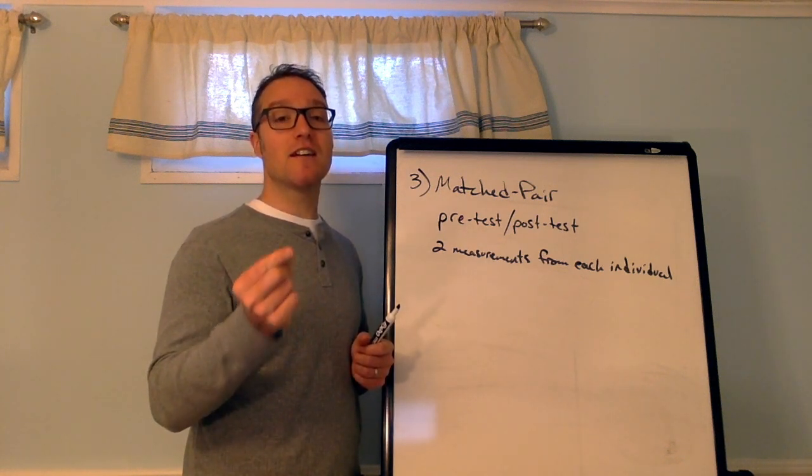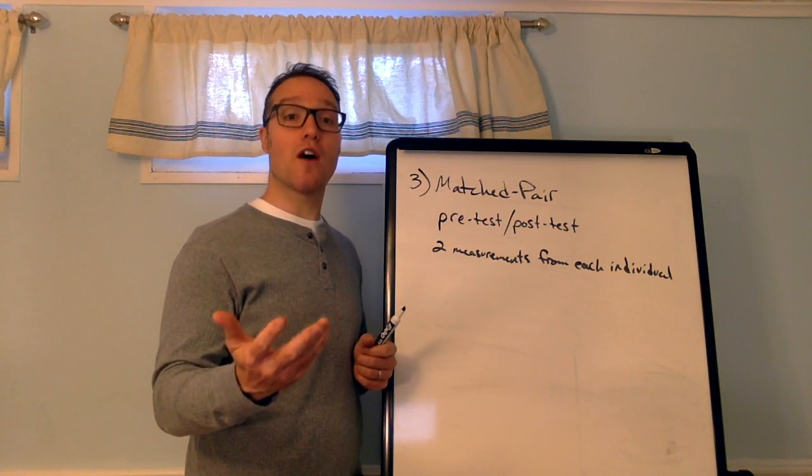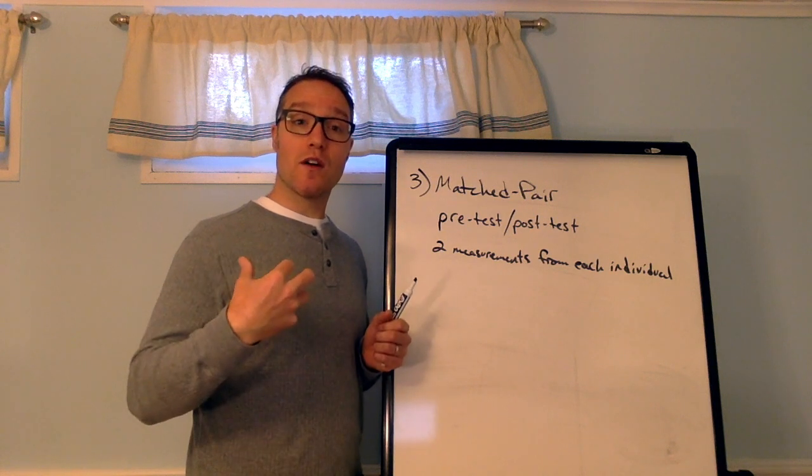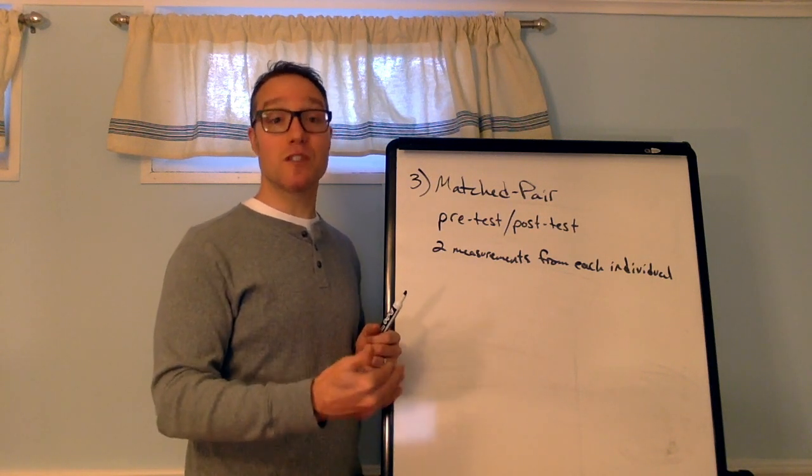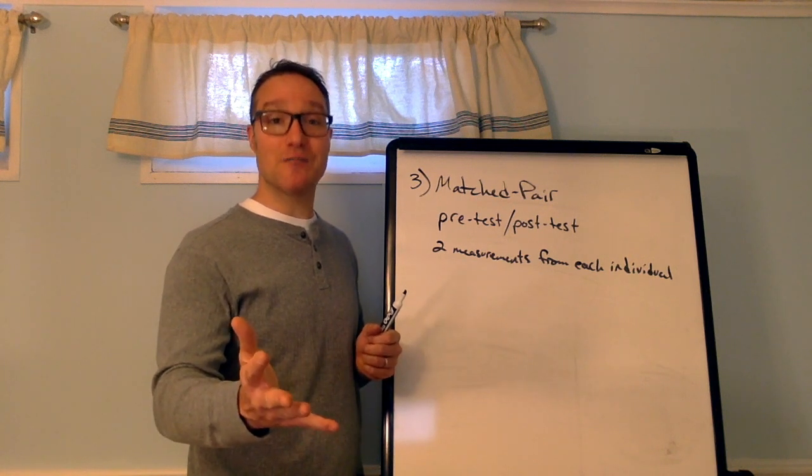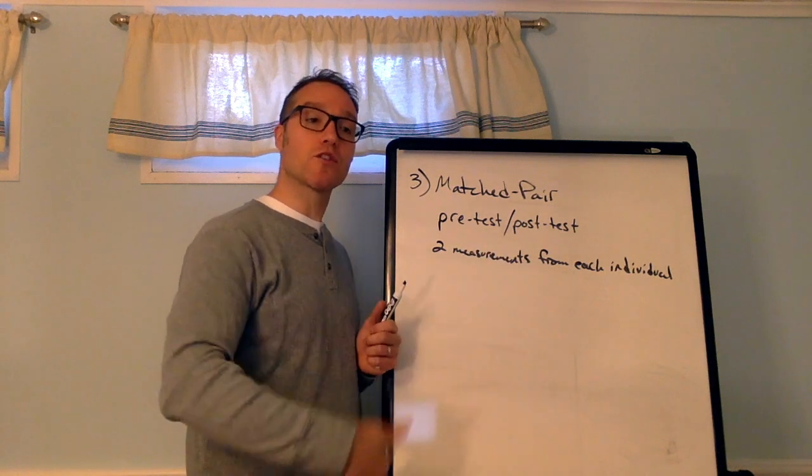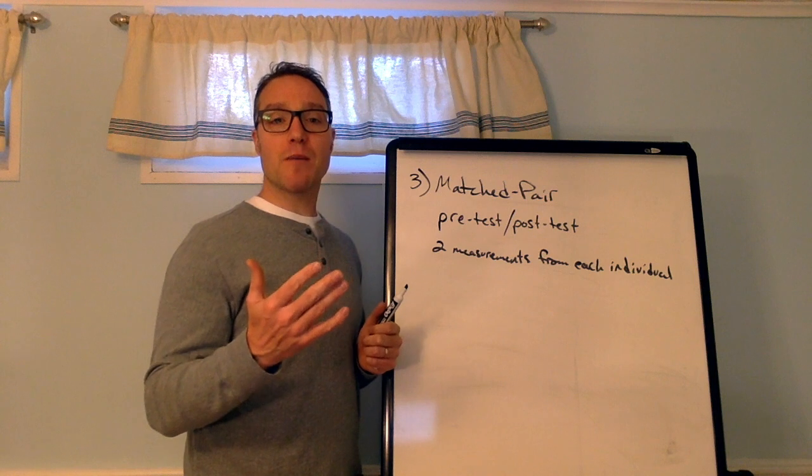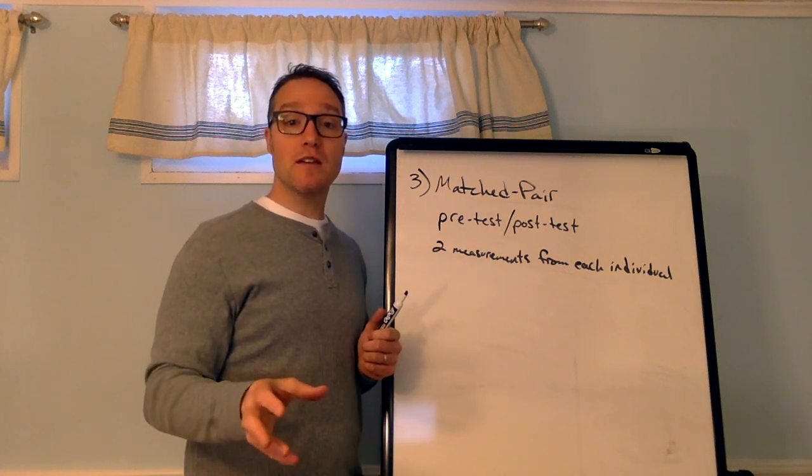And another key thing to look out for is identical twins are used in research often because they're genetically the same. So, they're often compared directly as if they were clones of each other. Now, we could talk about the ethics of that, but we're not going to get into it. So, two measurements from each individual or two individuals that are very, very similar. Matched on many things.